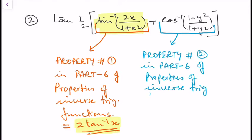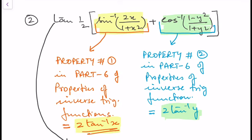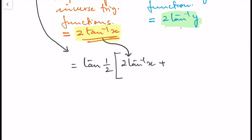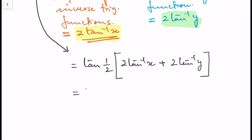Using the property from our video on properties of inverse trigonometric functions: cos⁻¹((1−y²)/(1+y²)) = 2tan⁻¹(y). Now substituting these values, we get tan(1/2 · (2tan⁻¹(x) + 2tan⁻¹(y))), which simplifies to tan(tan⁻¹(x) + tan⁻¹(y)).